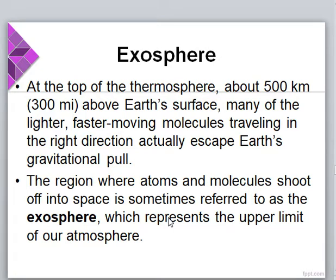At the top of the thermosphere, about 500 kilometers above Earth's surface, many of the lighter, faster-moving molecules traveling in the right direction actually escape Earth's gravitational pull. This region where atoms and molecules shoot off into space is called the exosphere, and it represents the upper limit of our atmosphere — the outermost layer.